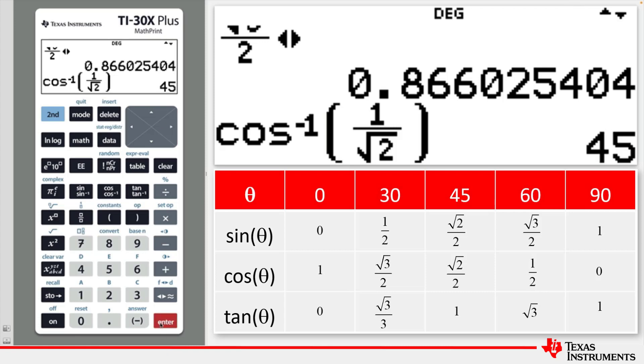Because we're in degree mode, this says that the inverse cos of the ratio 1 over root 2 is 45 degrees.